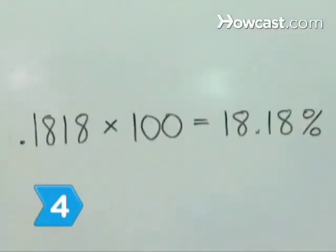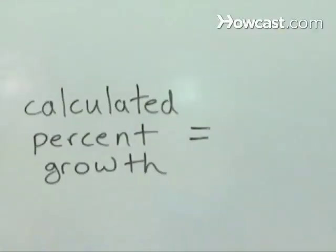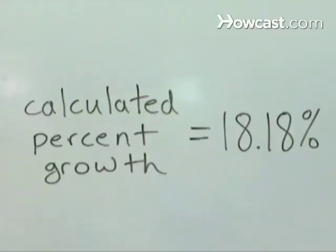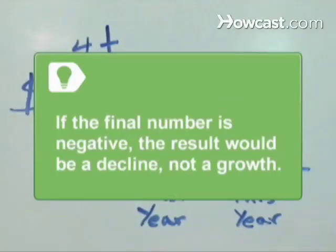Step 4. Add a percent sign to the end to finish your calculated percent growth. Our example ends in 18.18 percent. If the final number is negative, the result would be a decline, not a growth.